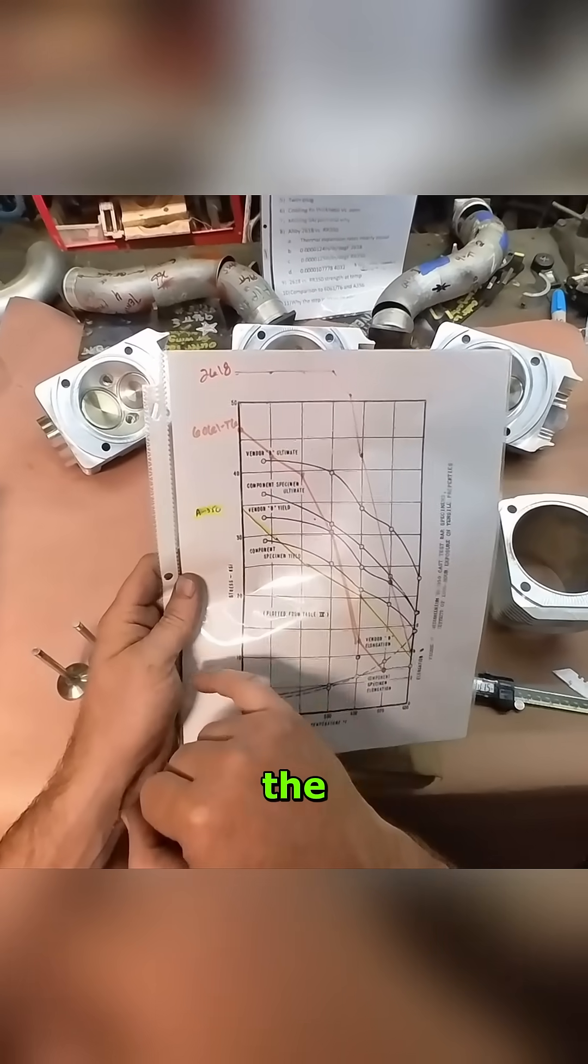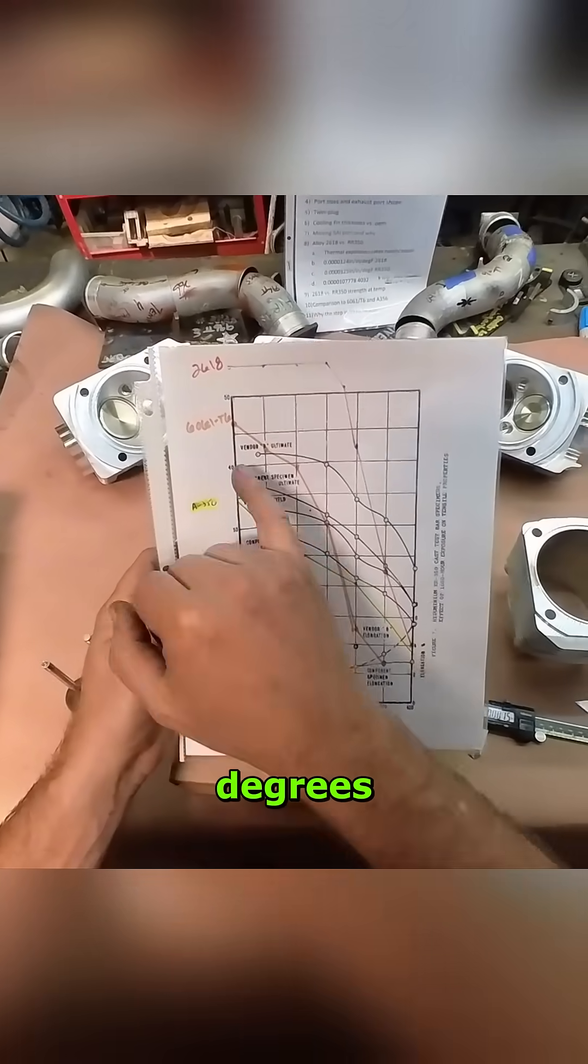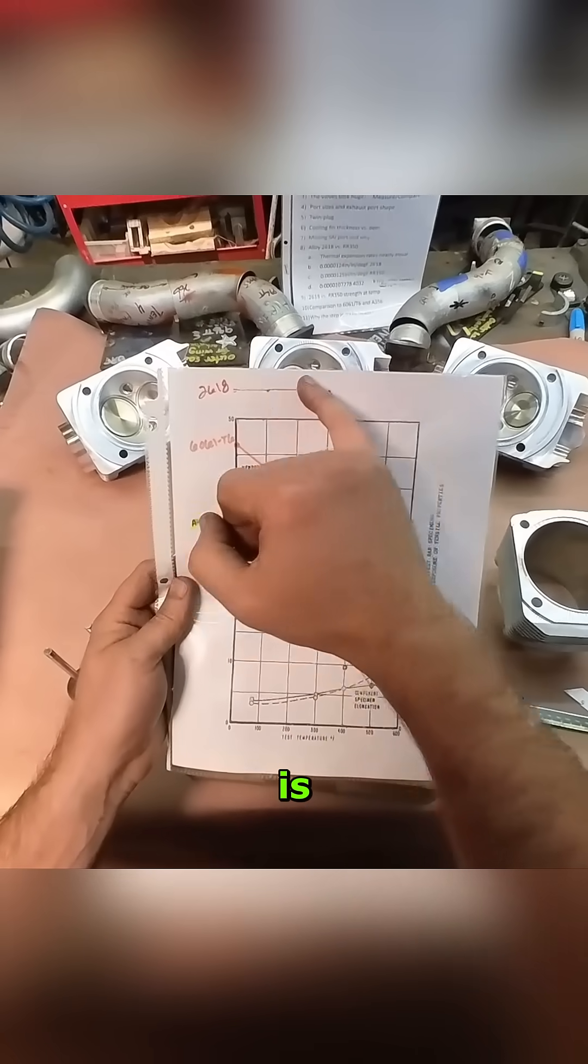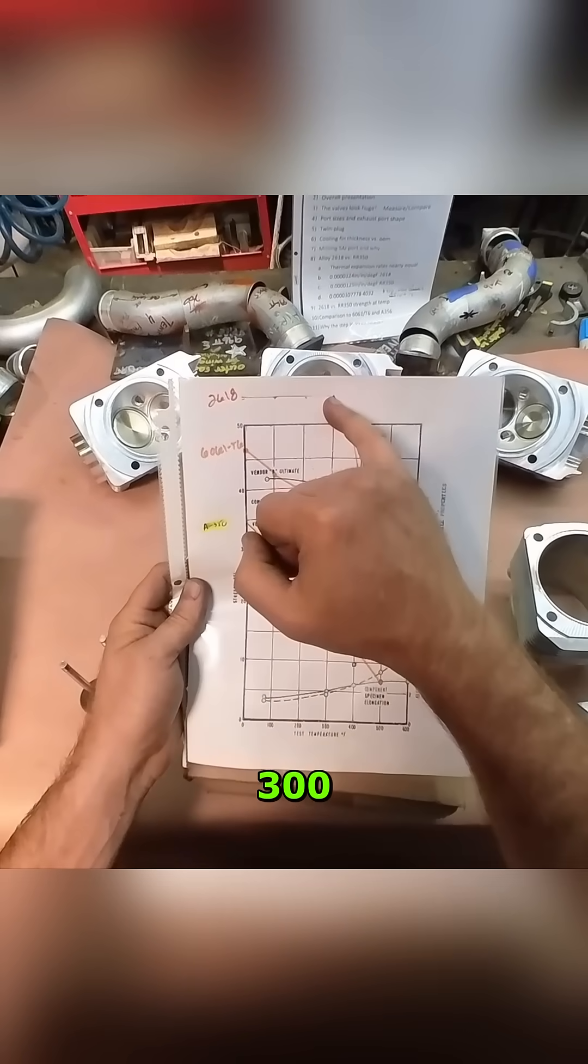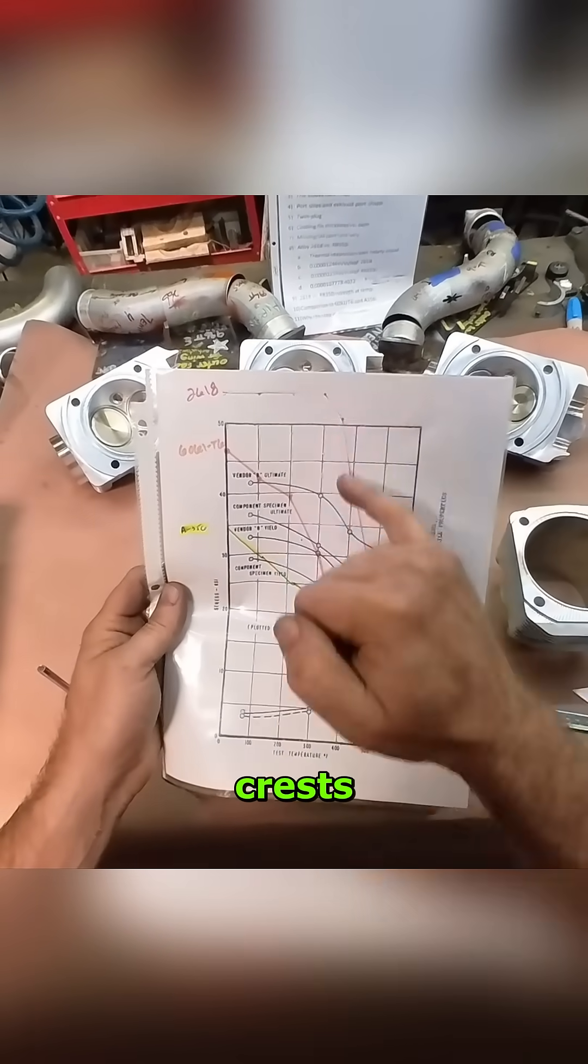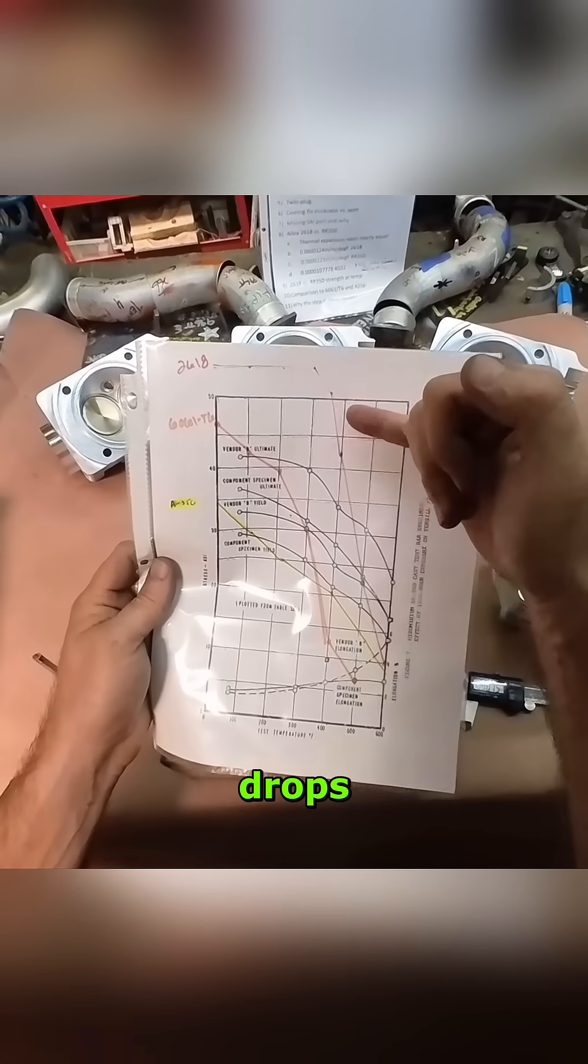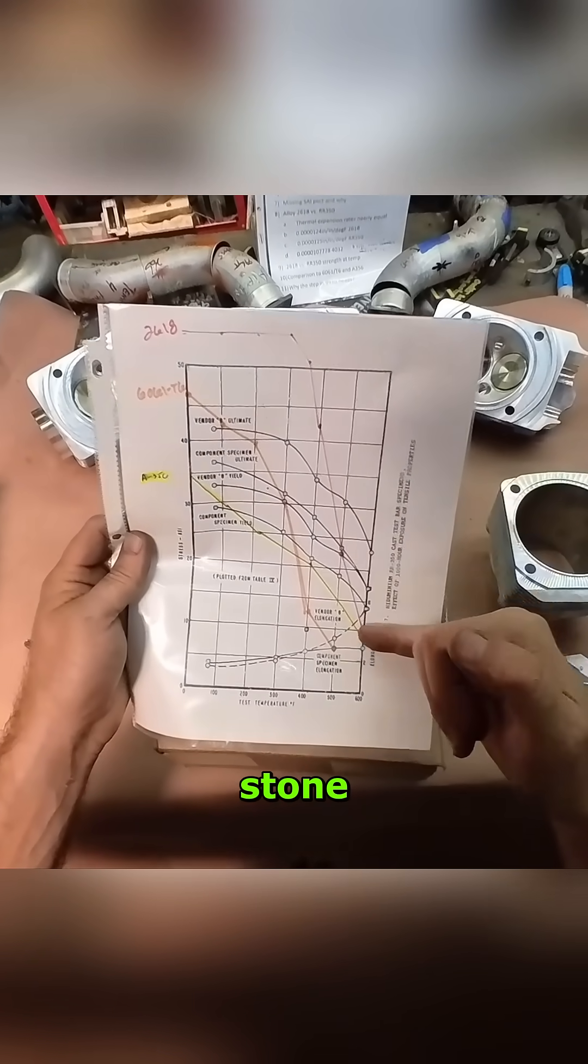Anyway, the strength on the aluminum at 100 degrees on the 2618 is just off the charts all the way to 300 degrees. It literally isn't losing any strength. As soon as it crests 350, it starts dropping down and then it drops like a stone.